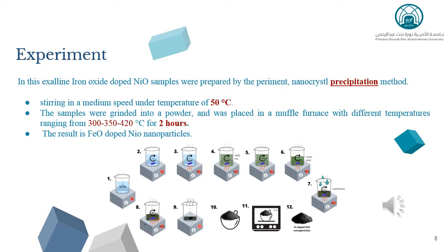The samples were made by the chemical precipitation method. First of all, both iron nitrate and nickel nitrate were dissolved in an aqueous solution and kept stirring under medium speed and a temperature of 50°C. After that, it was ground into a powder and placed in a muffle furnace with temperatures ranging from 300 to 420°C for 2 hours, resulting in iron-doped nickel oxide nanoparticles.